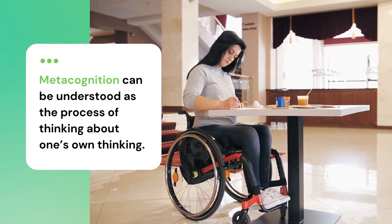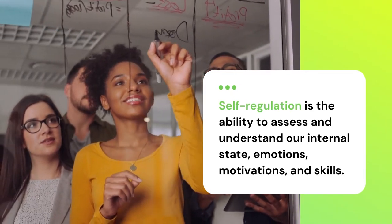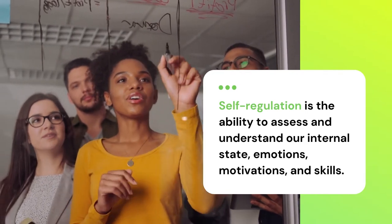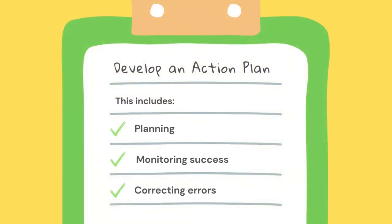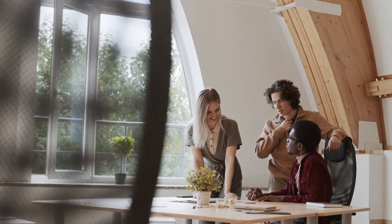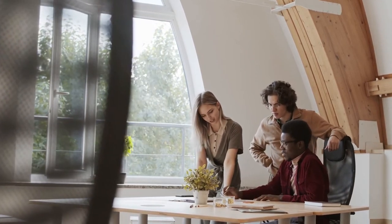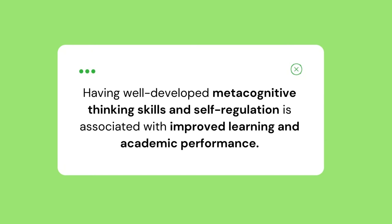Self-regulation can be defined as the ability to assess and understand our internal state — our emotions, motivations, and skills — and develop an action plan or strategy to effectively respond to external challenges. This includes planning, monitoring success, and correcting errors. When we goal set and try new learning strategies or seek out particular resources to help us achieve or change our plans of action, we are practicing self-regulation. Having well-developed metacognitive thinking skills and self-regulation is associated with improved learning and academic performance. Self-regulation also helps build up your resilience so that you can work through challenges.